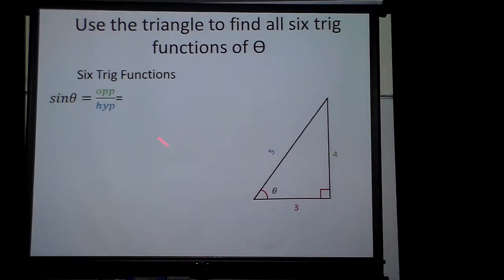So it should tell you that if this is my theta, this is the opposite. So I'm going to have 4 fifths. That's all there is to it. So cosine, if it's adjacent over hypotenuse, what do you think it's going to be? Those that said 3 fifths, you're correct.